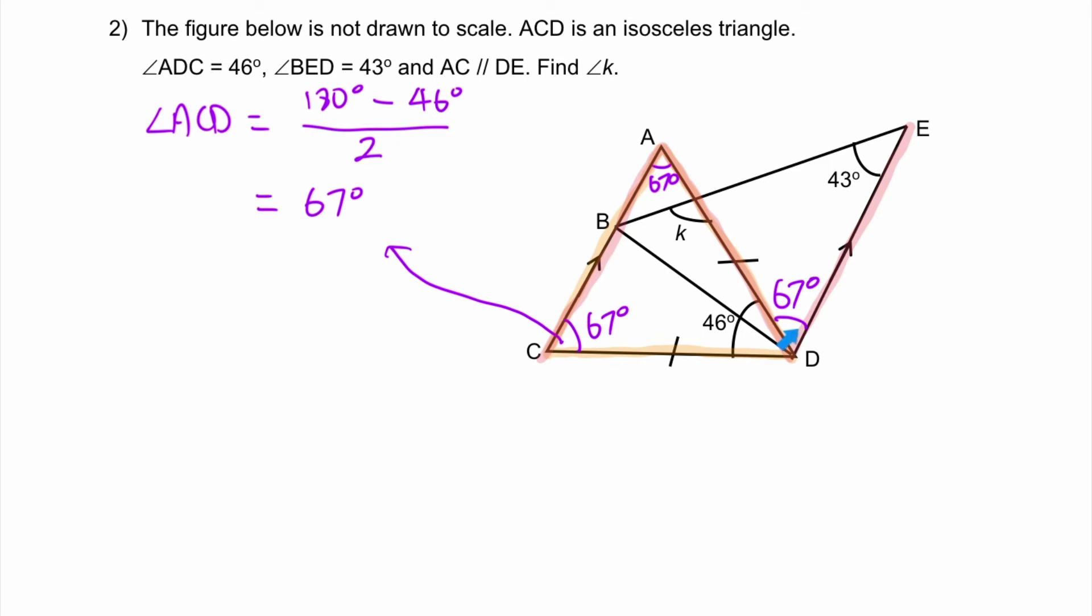Another way to get to this angle is to use the property of a trapezium. You can see that CBED is a trapezium, which means this angle and this angle will add up to 180. If you take 180 minus 67 minus 46, you will get the answer, which is 67 degrees.